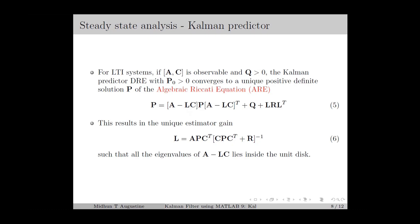As k increases, the Riccati matrix Pk of the Kalman predictor converges to a fixed matrix P, which is the solution of the algebraic Riccati equation. Similarly, the gain matrix Lk converges to a fixed matrix L as given in equation 6.